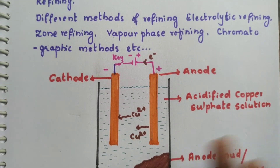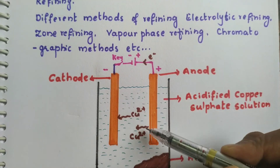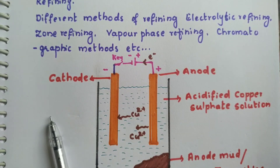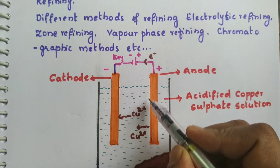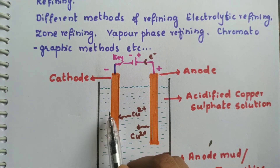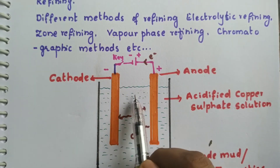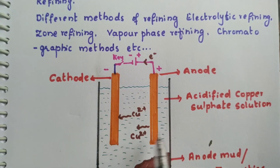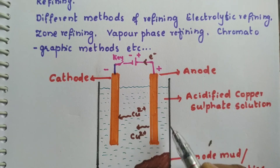Let us see the setup for electrolytic refining. A big container is taken. We are doing refining of copper. The impure metal obtained after extraction is used as the anode, and a pure copper strip is used as the cathode. The liquid in the container is acidified copper sulfate — a salt solution of the same metal — and it is acidified to increase conductivity.